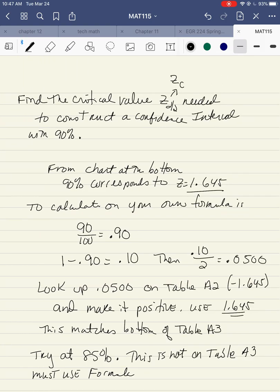Right there is 90%, and the value is 1.645. That would be Z. From the chart at the bottom, the 90% confidence interval, or confidence level, corresponds to Z equal to 1.645. And this is a critical value.